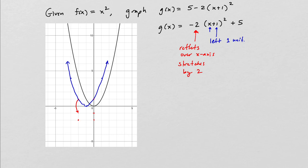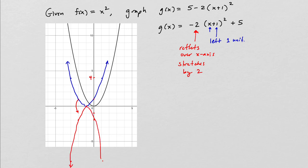The same thing happens with the other points. This point stays where it is. And this point, instead of being up at positive 4, it's going to be shifted to negative 4 and then doubled to negative 8 — so it's going to be somewhere way down here. That is what this graph looks like after the reflection and vertical stretch.